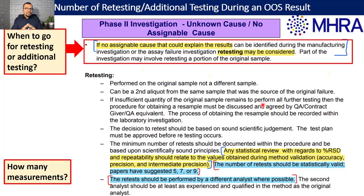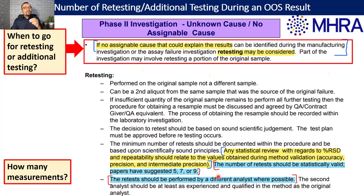The second important question is how many re-measurements or retestings you are going to conduct. For regulatory reference on the number of preparations, the same guidance indicates that five, seven, or nine preparations are suggested by some literature. However, this is just guidance — it doesn't mean you have to strictly follow those exact numbers.